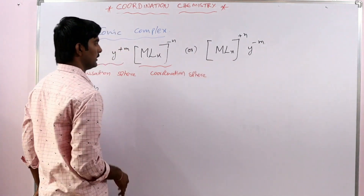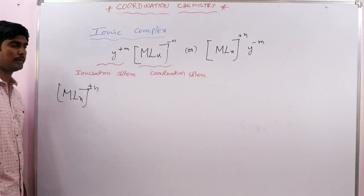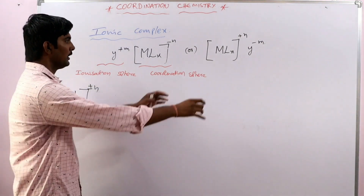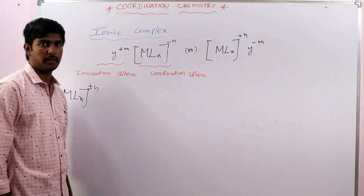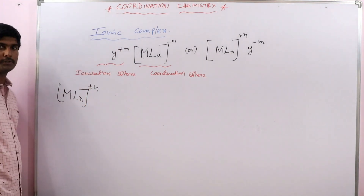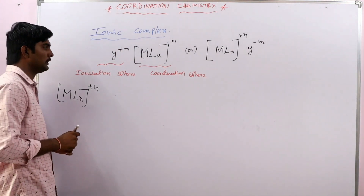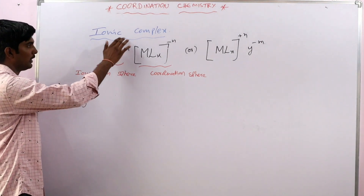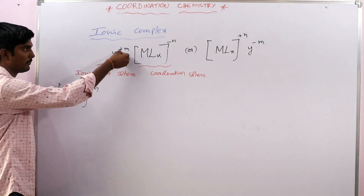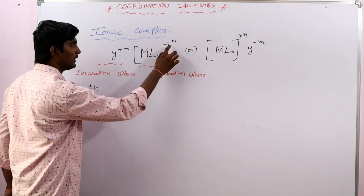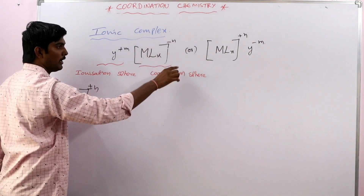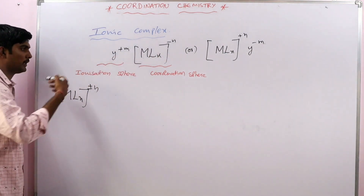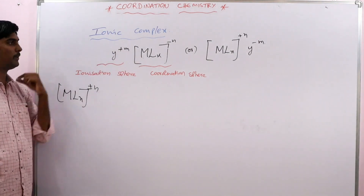In these two ionic complex examples, one has the ionization sphere on the left side of the coordination sphere, and another has it on the right side. The left side position is called the cationic position, and the right side position is called the anionic position. When the ionization sphere is in the cationic position, it carries a positive charge. When the coordination sphere is on the right side, it is in the anionic position and carries a negative charge.